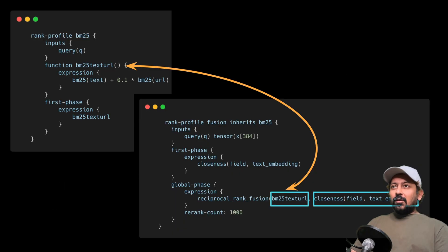So if we look at an example like what we did in the previous video or the previous tutorial, so we had this BM25 text URL function which takes BM25 of text and adds 10% of BM25 of URL, and we just supply them both in the reciprocal rank fusion function.